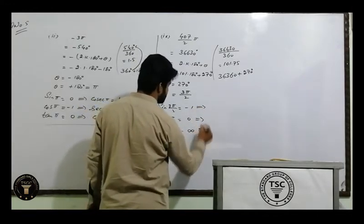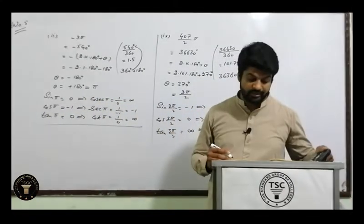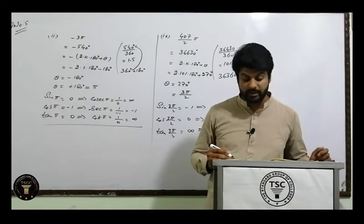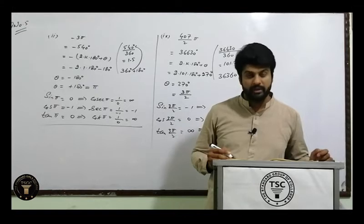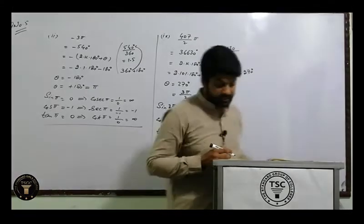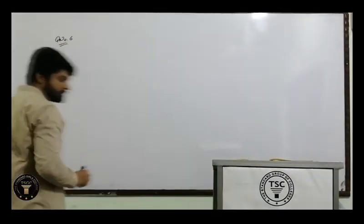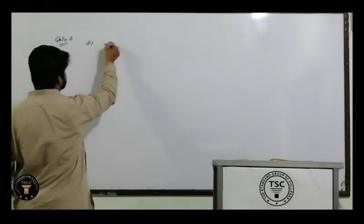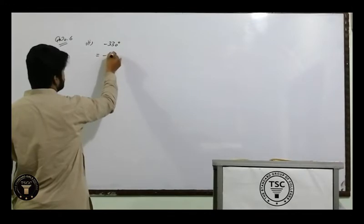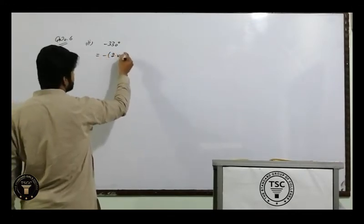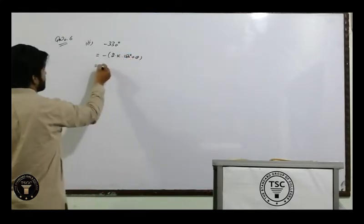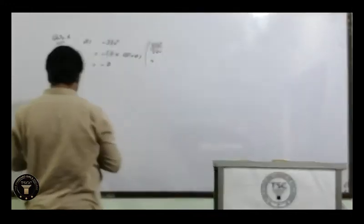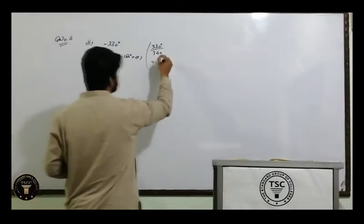Question number 6: find the values of trigonometric functions of the following angles. Q6 is very important — part 8 came in long questions in 2013 and 2018. First part: minus 330°. Same procedure as Q5: 2·k·180 + θ. K: 330 ÷ 360 = 0.91. Point ke baad value 80 ya usse above aaye toh round off karo — so k = 1 (not 0).